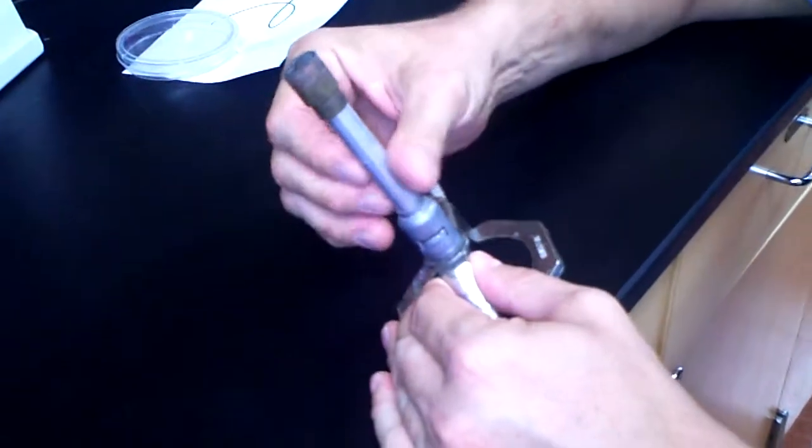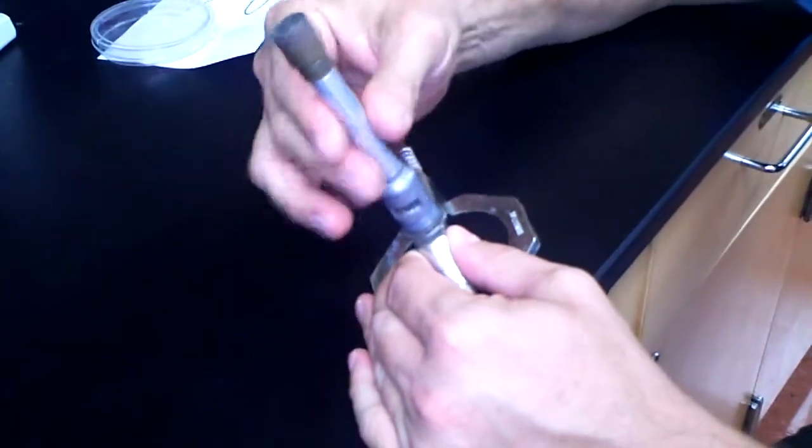So this is the Bunsen burner. When you disassemble the barrel, you unscrew the barrel.